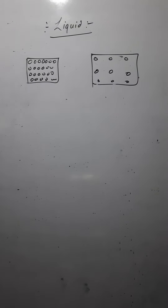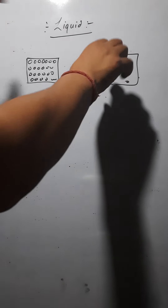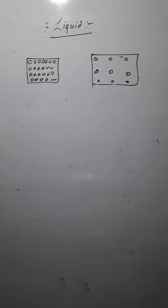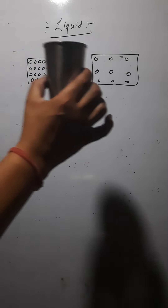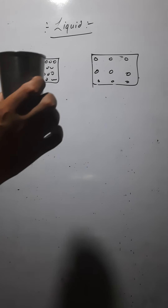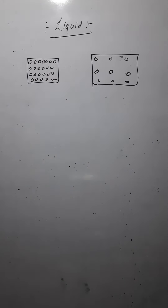We cannot change the shape of a solid — if you want to change the shape of a solid, it would break. But in case of liquids, we can change the shape because the particles are far apart, they have some space in between them. Like suppose you have water and you keep it in a glass, the water would take the shape of the glass. If you keep water in a bowl, the water would take the shape of the bowl. That is why the shape of liquids can be changed, but the shape of solids cannot be changed.